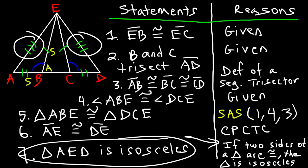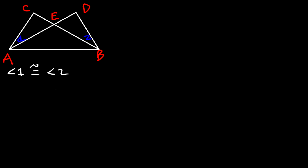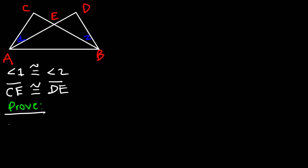Now let's look at one more example. Label the points A, B, C, D, and E. Call the two angles at point C angle one and angle two. We're given that angle one is congruent to angle two. We're also given that CE is congruent to DE. Prove that triangle AEB is isosceles.